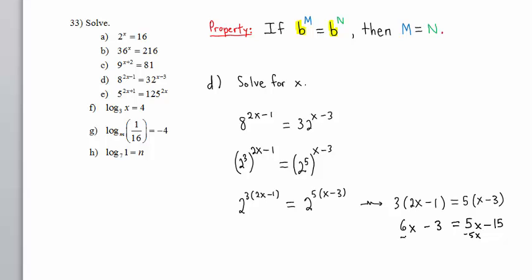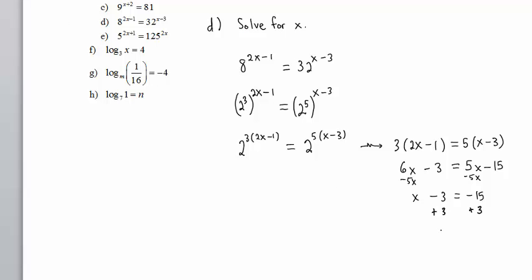Subtracting 5x, x minus 3 equals negative 15. Adding 3, we get x equals negative 12, and that is the solution to the equation.